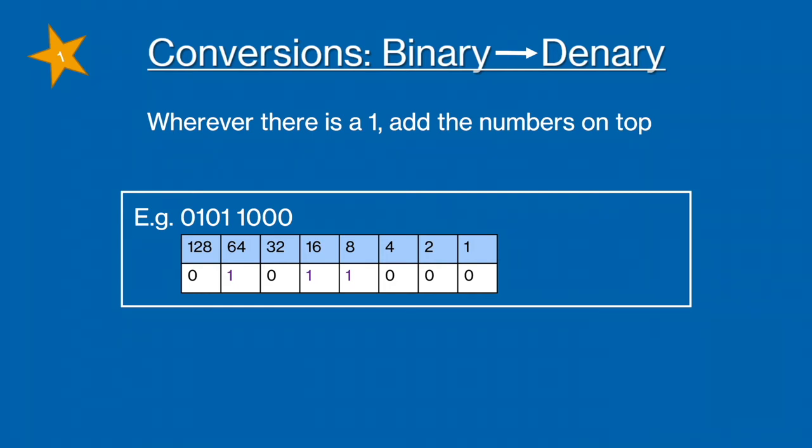Next wherever there is a one, like the rule says, you're going to add the numbers on top. So for this example we're going to add 64, 16 and 8 and that's going to give us a result of 88 and that's your answer.